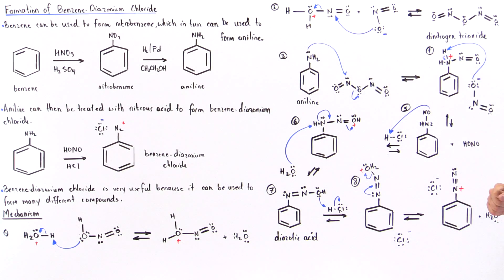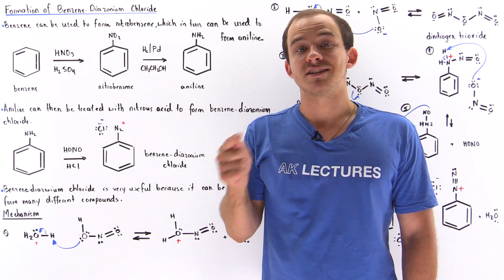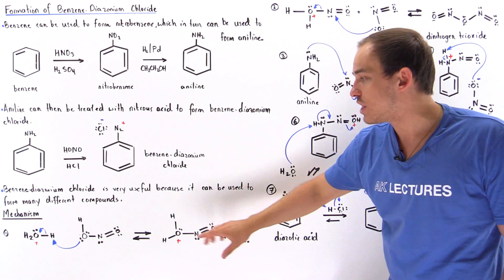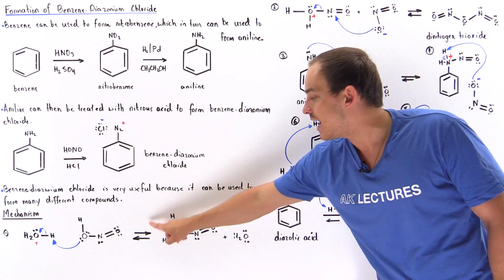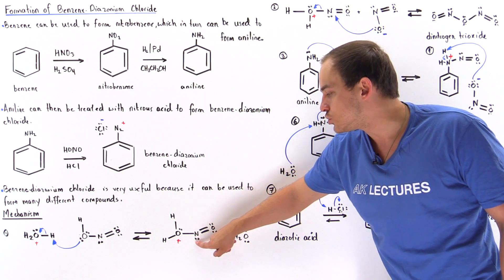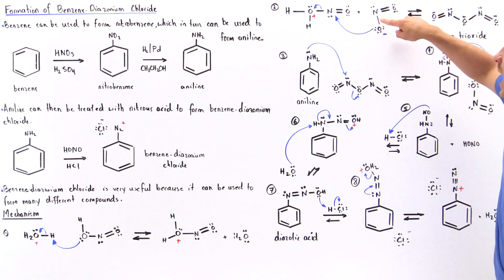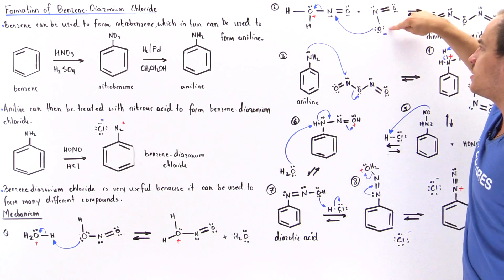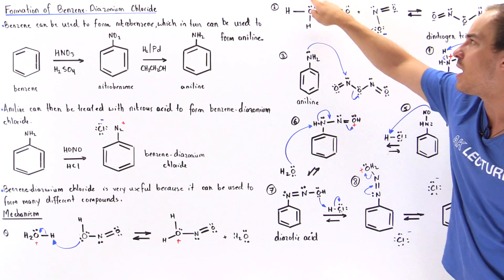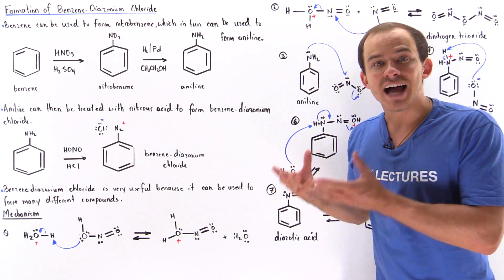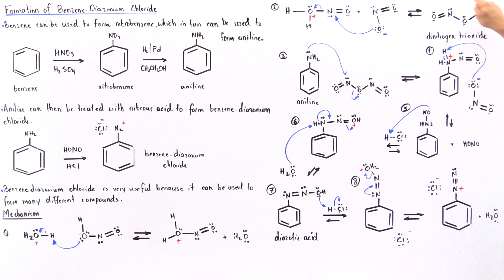The conjugate base has an oxygen without the H atoms, giving it a negative charge. This oxygen uses its lone pair of electrons, acting as a nucleophile attacking the nitrogen of the molecule formed in step one. Because the bond between that oxygen and nitrogen is weak — it's a good leaving group — the oxygen forms a new bond with the nitrogen, displacing the water molecule, and we form dinitrogen trioxide (N₂O₃).